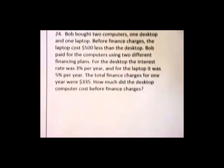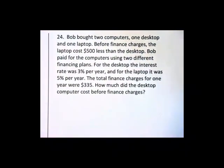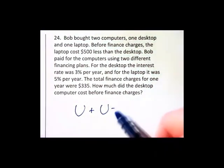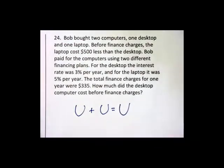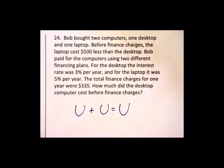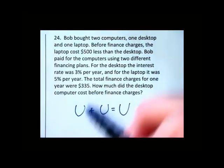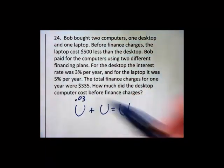Okay, and by popular demand I give you another mixture problem. But this time we're not mixing liquids as we did way back at the start of this video, this time we're mixing together desktop and laptop computers. Bob bought two computers, one desktop and one laptop before finance charges. The laptop costs $500 less than the desktop. Bob paid for the computers using two different financing plans. Percentages go on top, so 3%, I'm going to write that as a decimal this time.